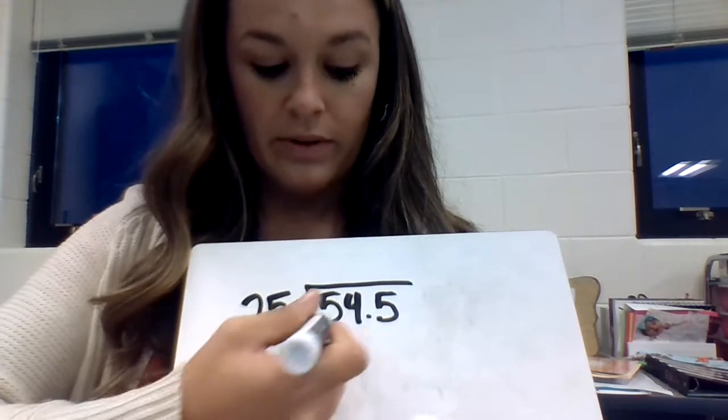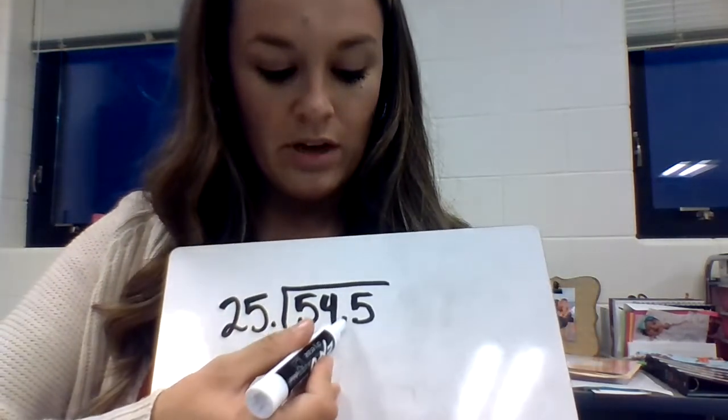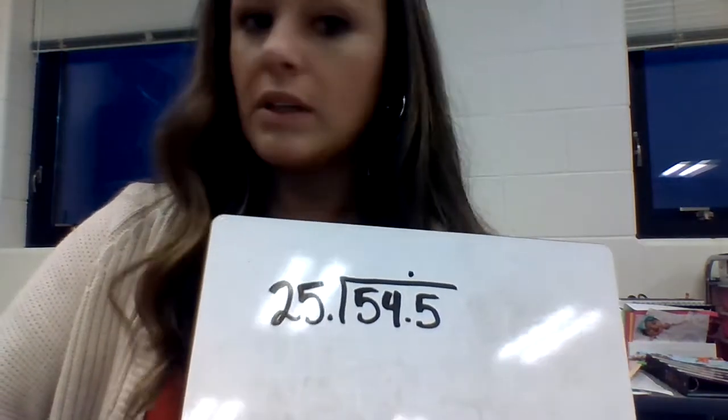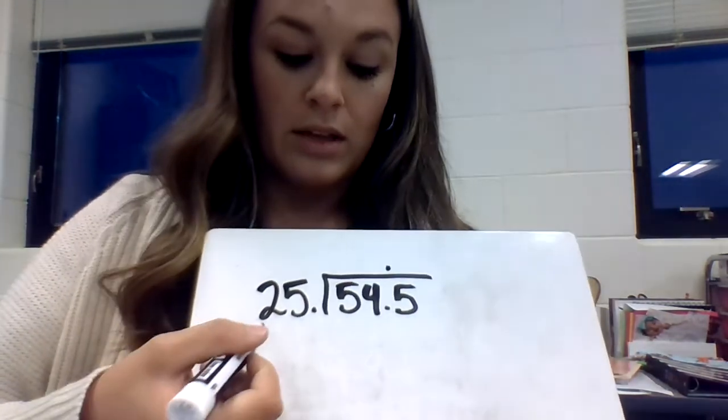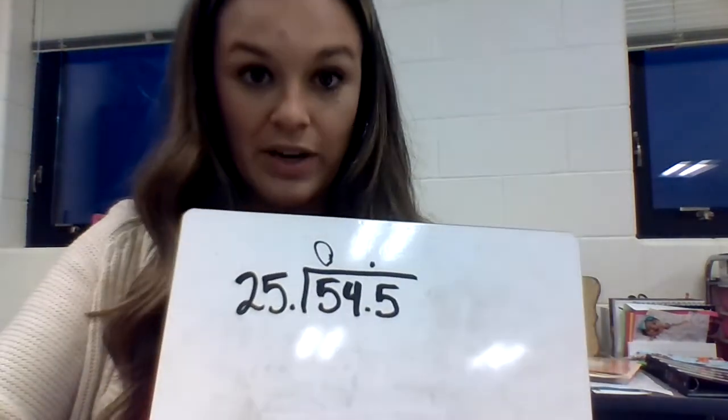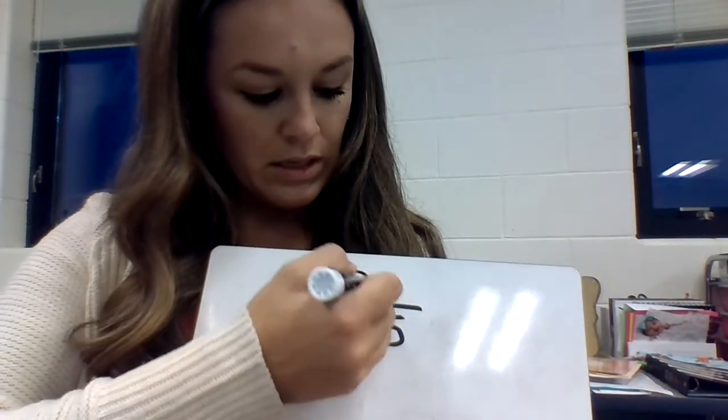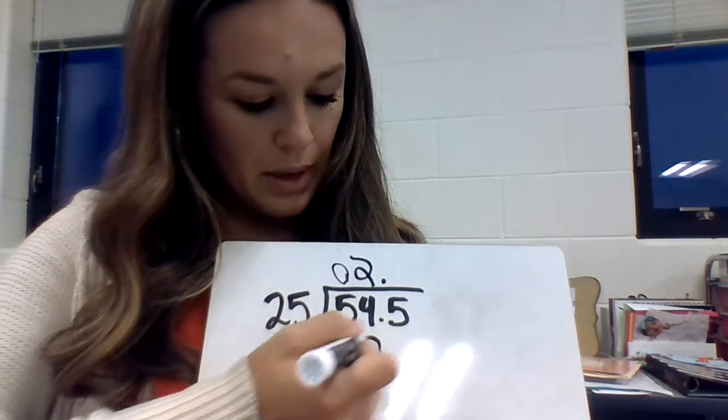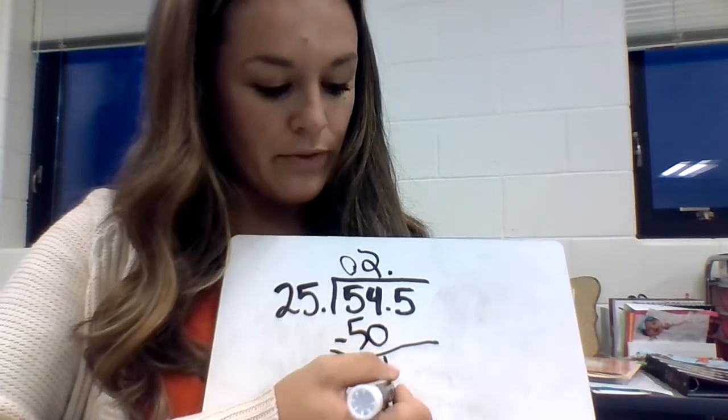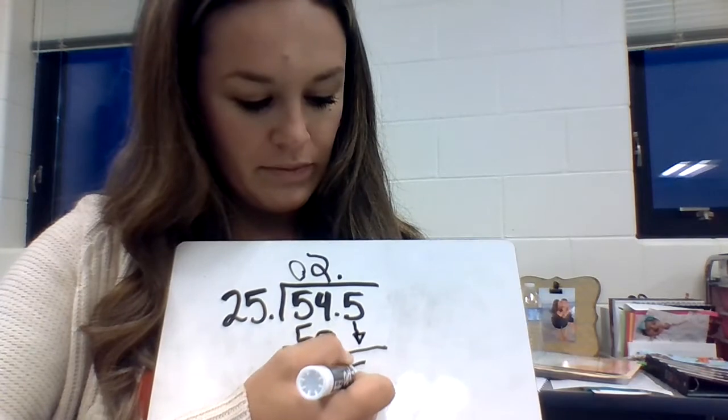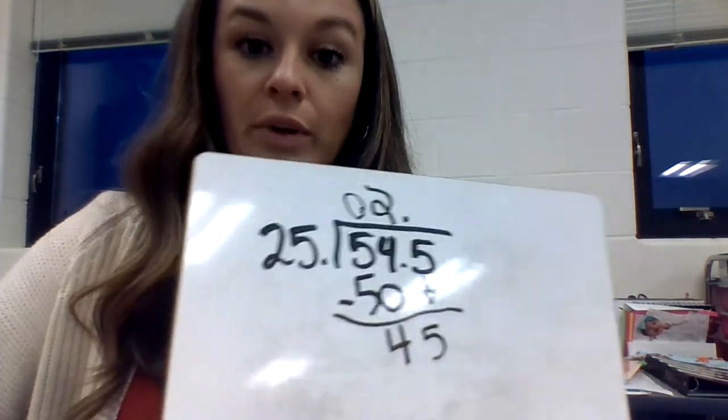That makes it 54.5 divided by 25. First thing I need to do is bring my decimal straight up. How many times can 25 go into 5? It can't. 25 is more than 5. So let's go ahead and put a 0 there. How many times can 25 go into 54? If you skip count by 25's, it goes into it twice. 25 times 2 is 50. Subtract. You've got 4. This is the part people forget. You need to bring down your next number.